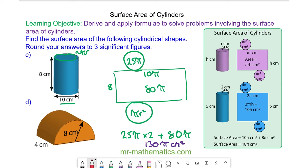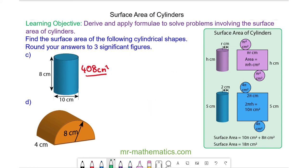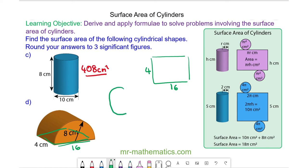We can approximate 130π as a decimal to 408 cm² to three significant figures. For question D, I'm going to consider each face in turn. The bottom face of the half cylinder has a length that is double the radius, which is 16, and the other length is 4. The front and the back are formed by two semicircles, which we can put together to make one circle where the radius is 8.